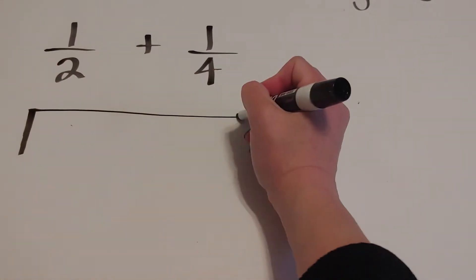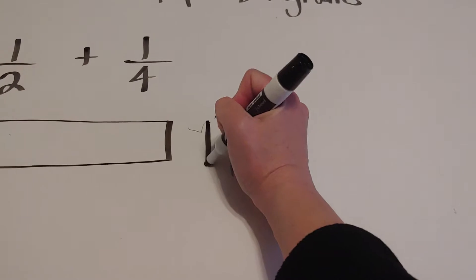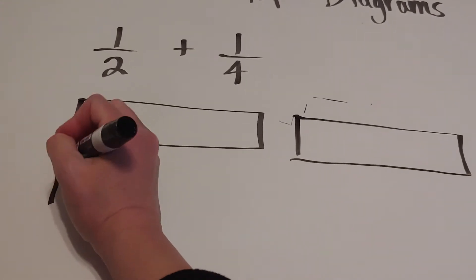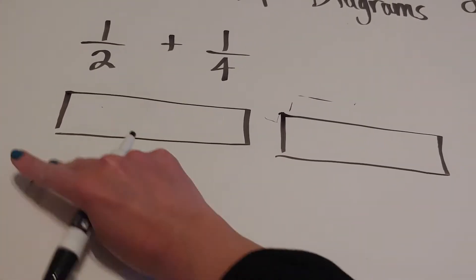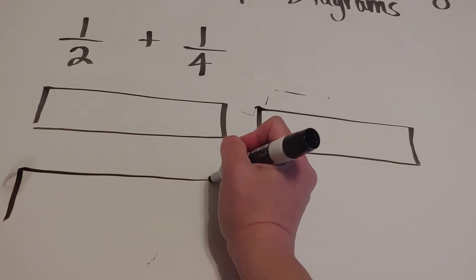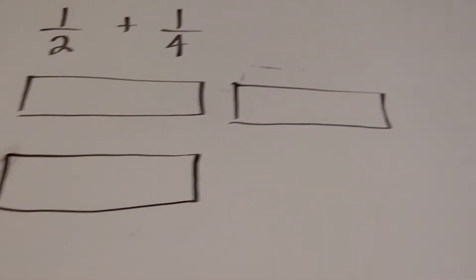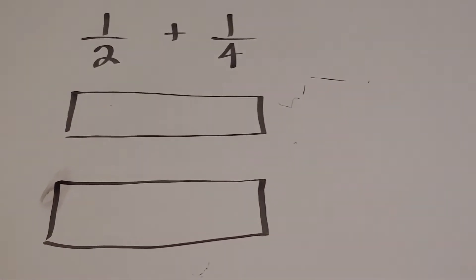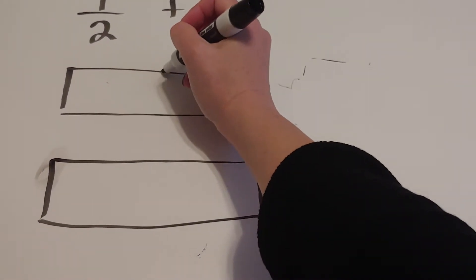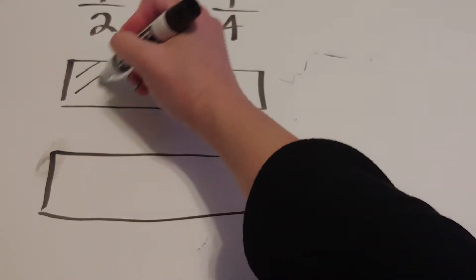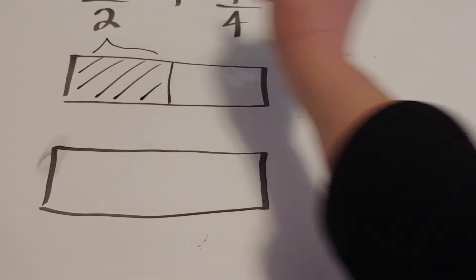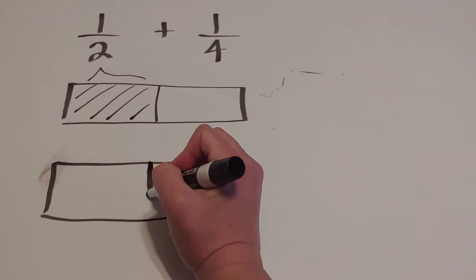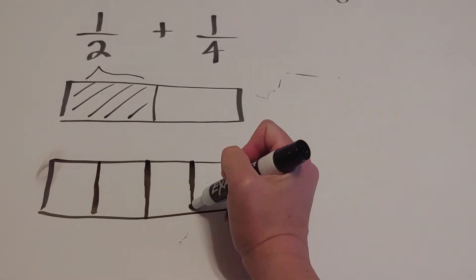In the homework you'll see that the tape diagrams are side by side. I actually find it easier to stack them on top of each other, so I'm going to do it that way. The reason I like stacking them up and down is that you can match the sizes a little bit easier. So what happens is you are going to cut this one to represent a half — cut it in half and shade. So this is one-half. The second one we're going to cut in fourths, and I'm going to shade one-fourth.